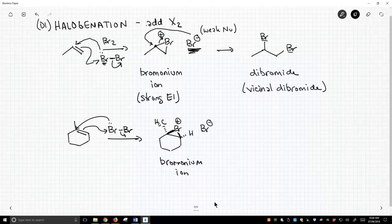And when this bromide up top attacked, it attacked at the more highly substituted carbon of the bromonium ion. The same thing is going to happen here. We will attack at the more highly substituted side. And we actually get inversion of stereochemistry here. So this is kind of SN2-like.